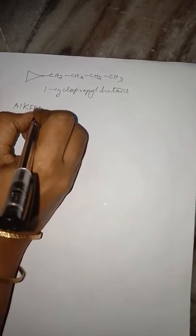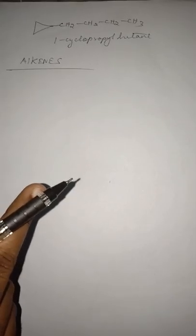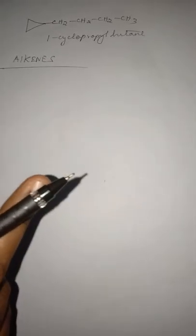Now let us name the next functional group: alkene. Listen to the rules for naming alkenes. Rule 1: select the longest carbon chain containing the double bond. Rule 2: name the longest chain. Rule 3: number the chain from the end closer to the double bond. Rule 4: indicate the position of the double bond by finding the number of the first carbon atom involved. Rule 5: alkyl groups and other substituents are numbered, named, and placed as prefixes in alphabetical order.